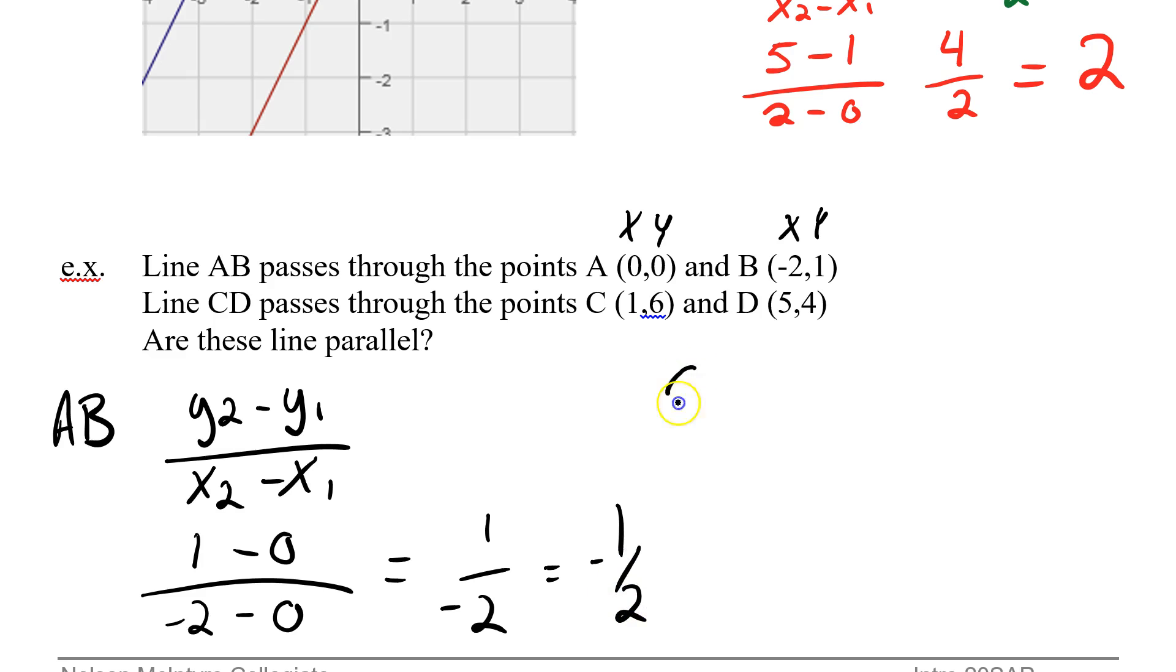Now let's try doing line CD. Same idea, y2 minus y1 over x2 minus x1. The y2 was 4 minus the y1, which is 6, divided by the x2, which is 5, minus the x1, which is 1. So this becomes 4 minus 6 is negative 2, divided by 5 minus 1, which is 4. And of course we can reduce this, we'll pull the negative sign, to negative 1 half.